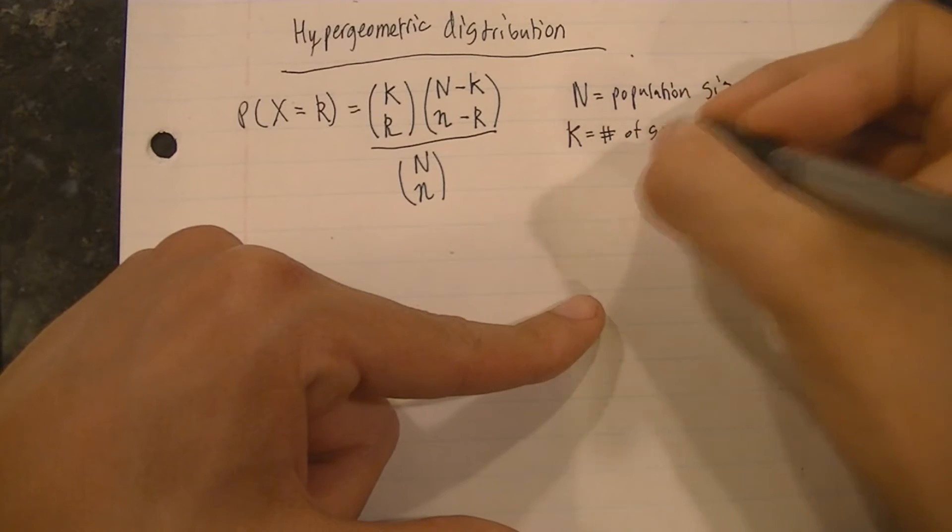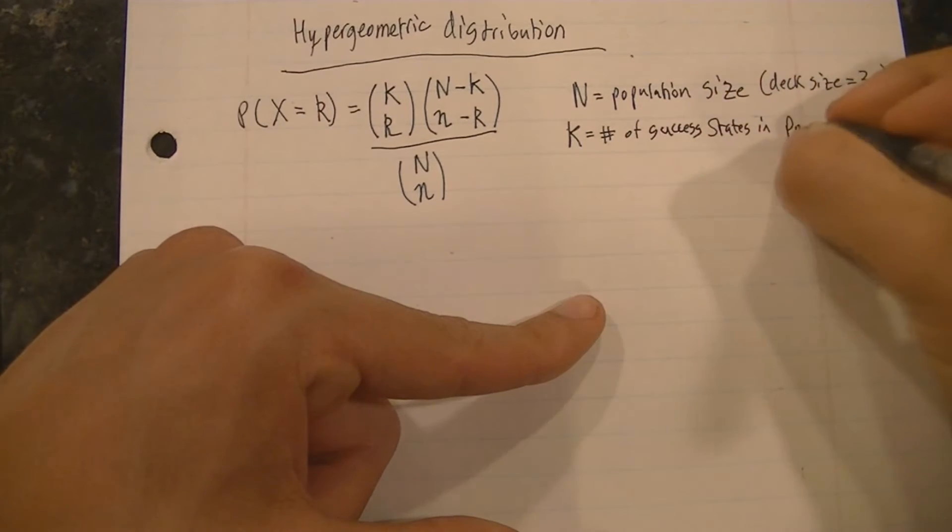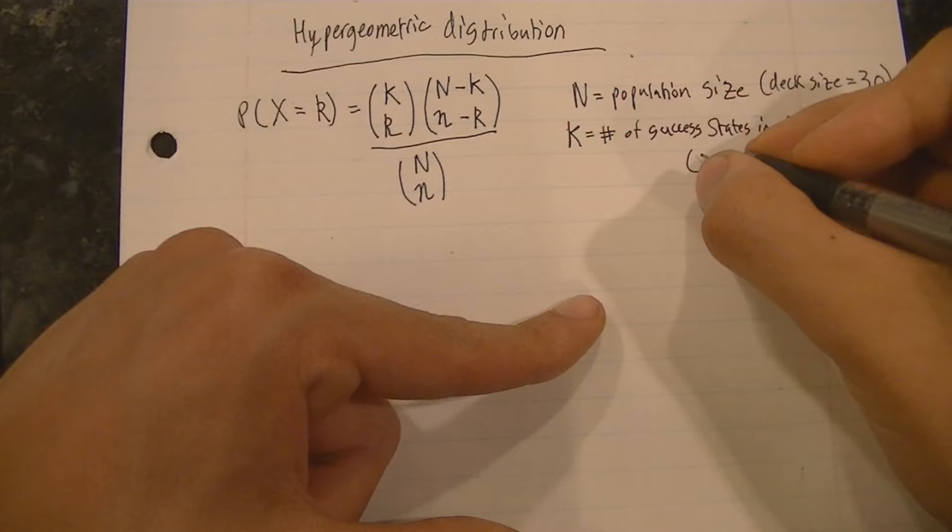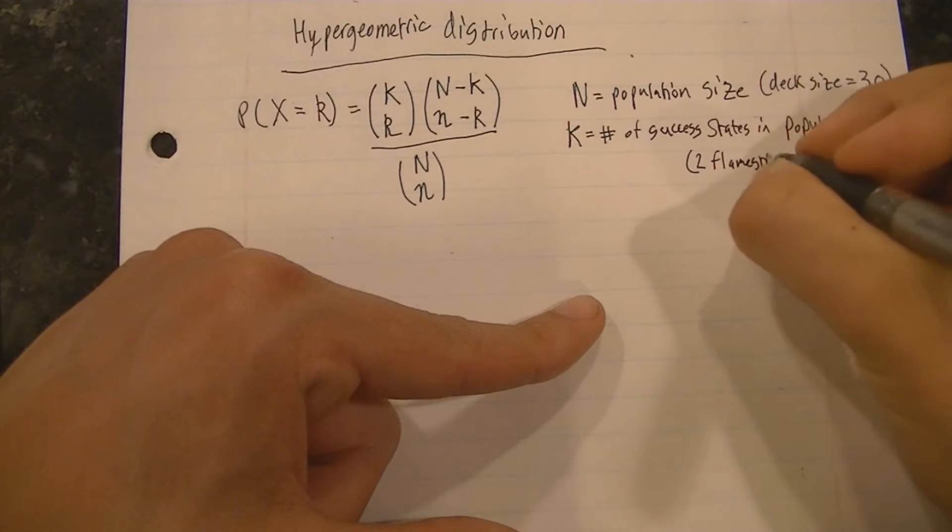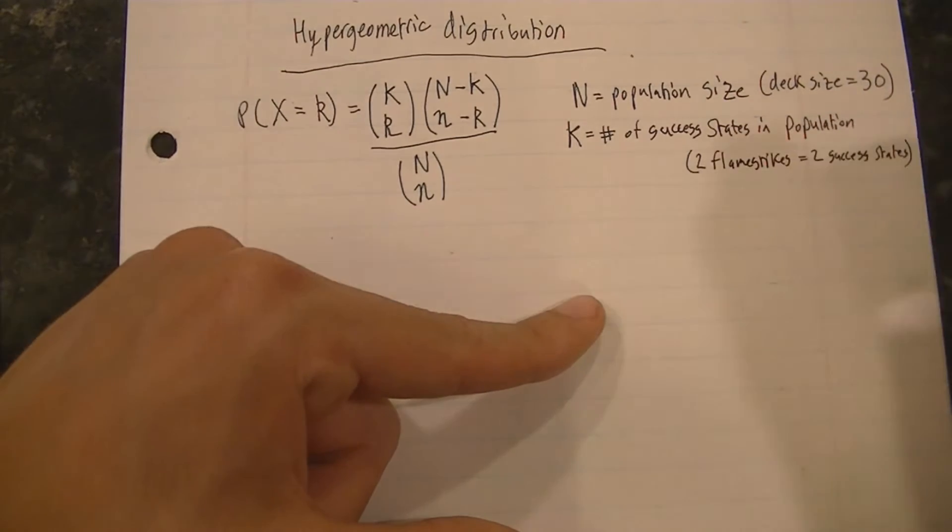Capital K is the number of success states in the population, so in our deck there are two flamestrikes and that means there are two success states within our deck.